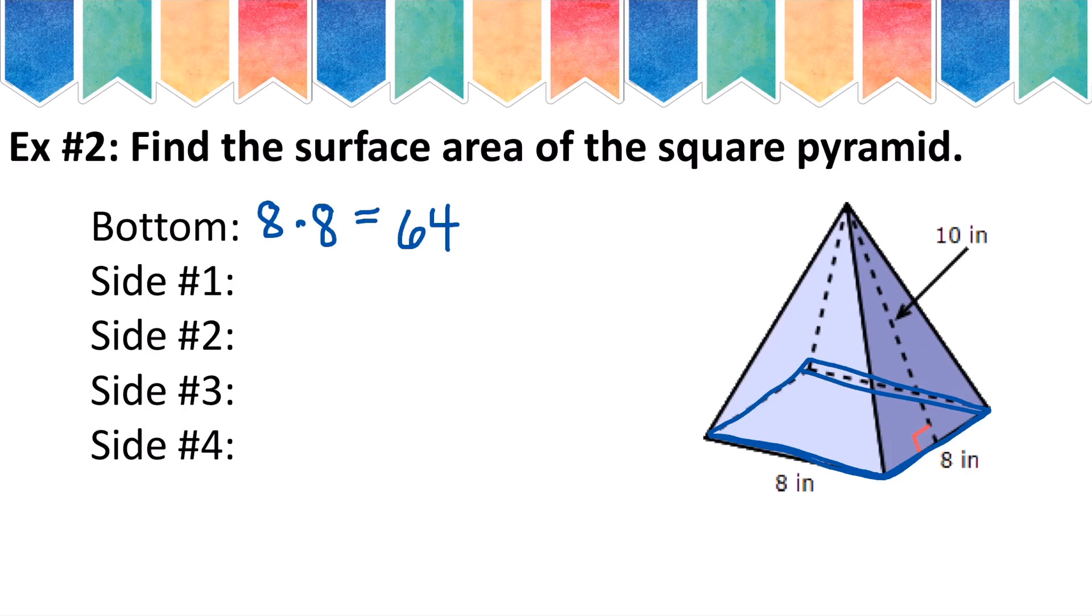Now I'm going to start looking at my triangular sides. Because it's a triangle, I'll have to do 1 half base times height. So 1 half times 8 times 10. And I'll get 40.